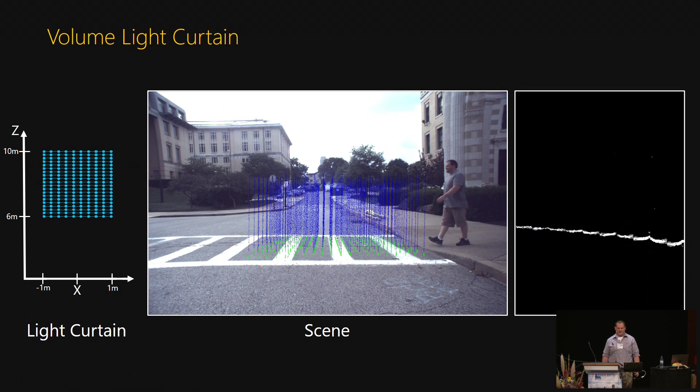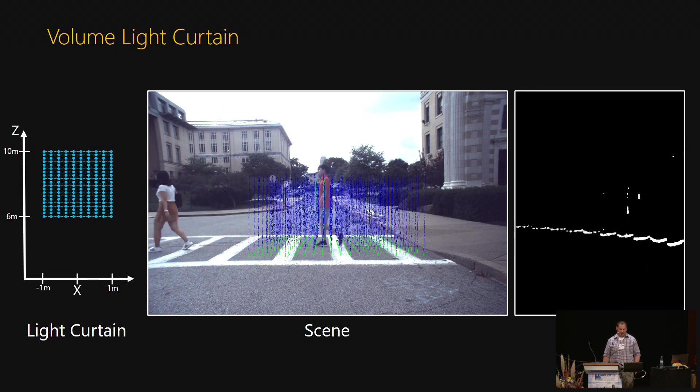This curtain detects objects by rapidly sampling a volume with discrete set of lines. Here, this curtain sparsely samples the volume to detect people in the entire crosswalk, rather than just a single plane.